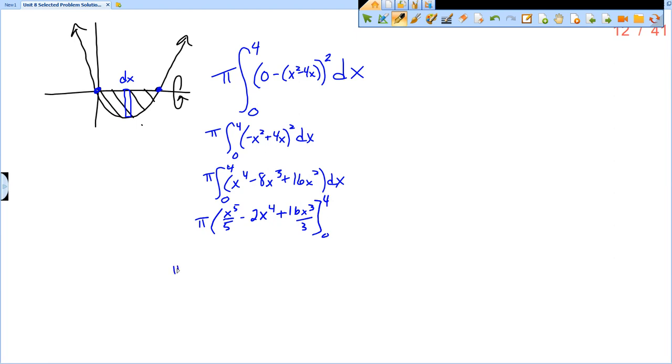So now we want to plug that in. So I have got the pi in front. So pi multiplied by everything. And so now I've got four to the fifth over five minus two times four to the fourth plus 16 times four cubed over three. All of that minus zero to the fifth over five minus two times zero to the fourth plus 16 times zero cubed over three. So of course the whole second part is zero. So that's nice.